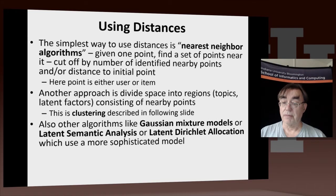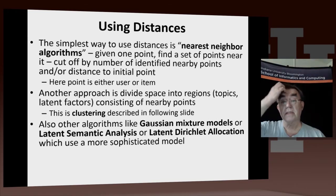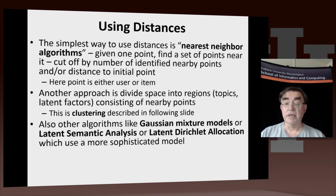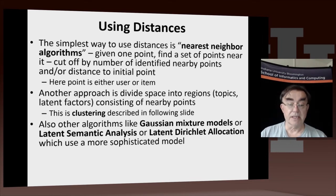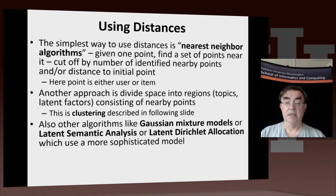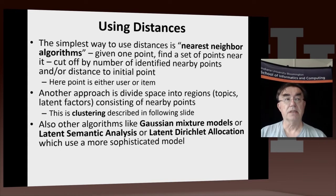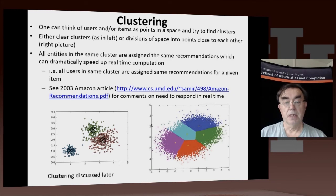Another important approach is to divide the space into regions. Those regions correspond to so-called latent factors or topics, and there we use technologies called clustering, Gaussian mixture models, latent semantic analysis, and latent Dirichlet allocation. All of these methods correspond to dividing space into regions. Dividing space into regions is one of these offline ideas — you cannot do it online — but once you have the regions defined, if a new item or new person comes along, you can decide which cluster they belong to very quickly. We will do clustering in more detail later on.